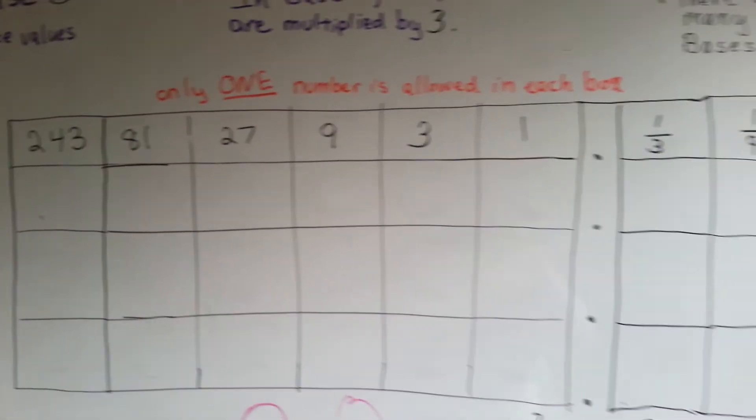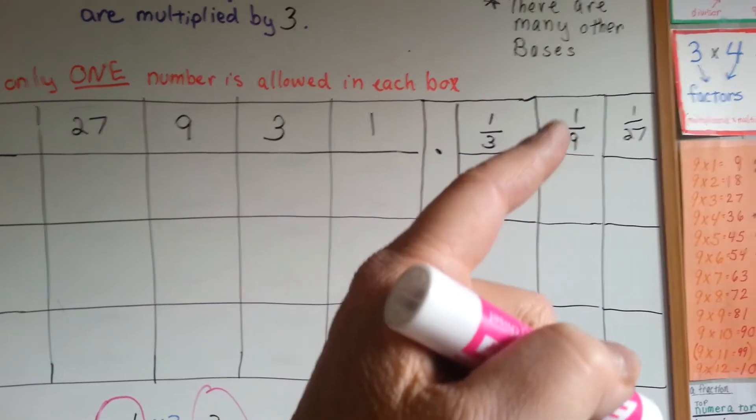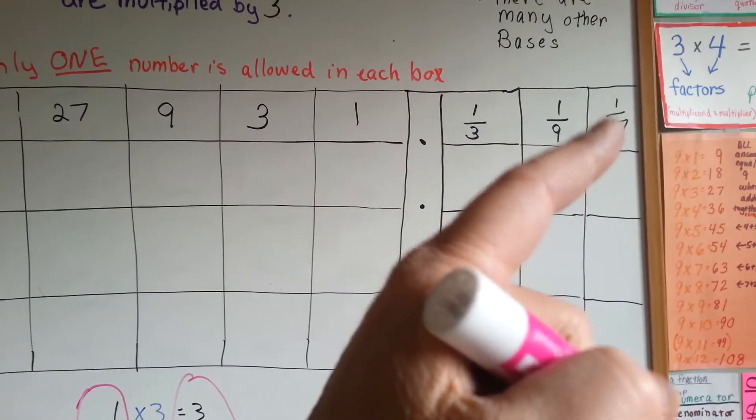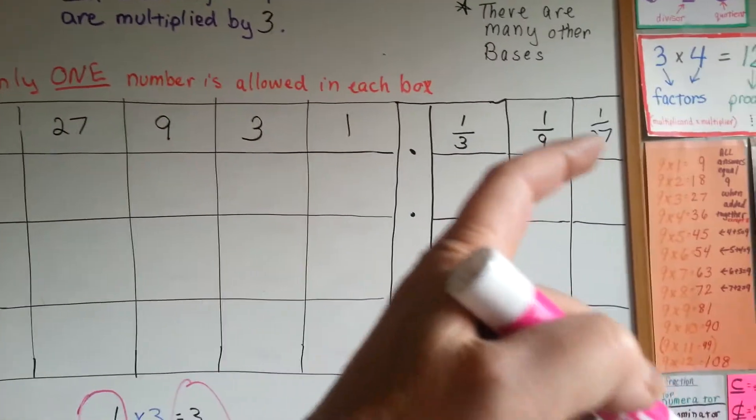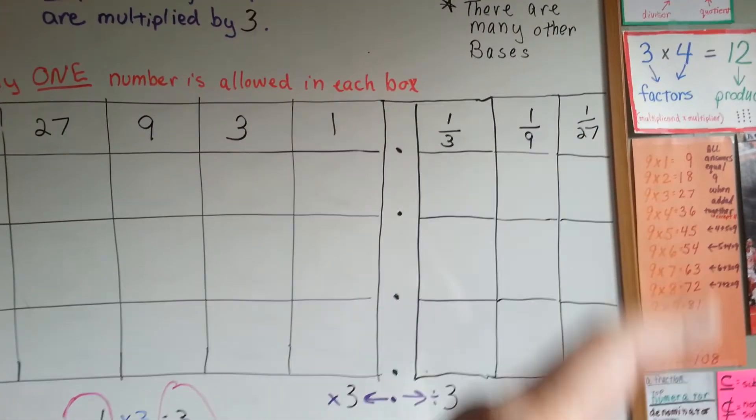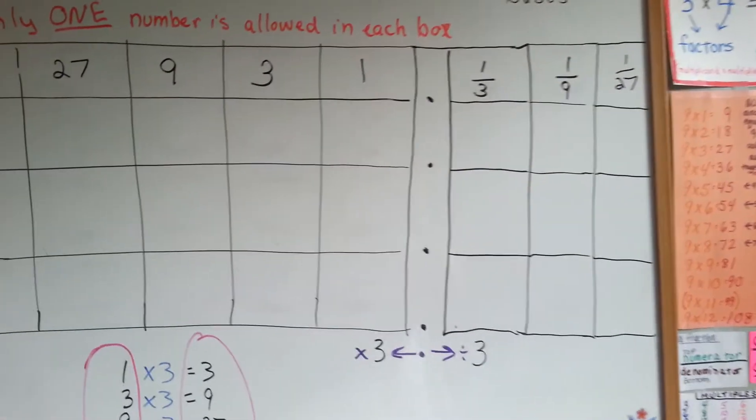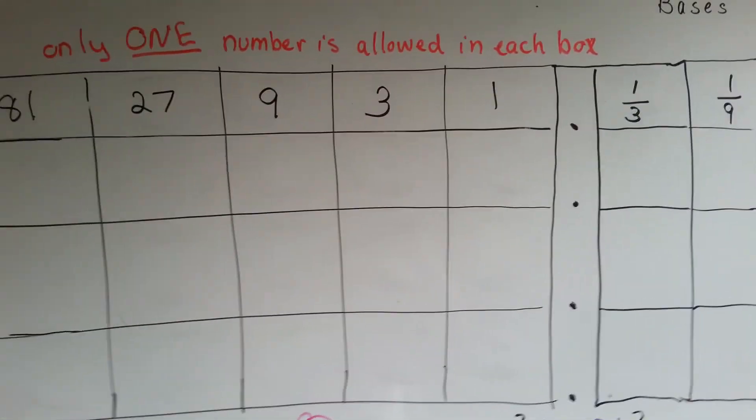And on the right side of the decimal point, we have thirds, ninths, 27ths. And you would have the next one, 1 over 81, because you would divide the 27 by a third, and you would just keep going that way. This is the way it works.